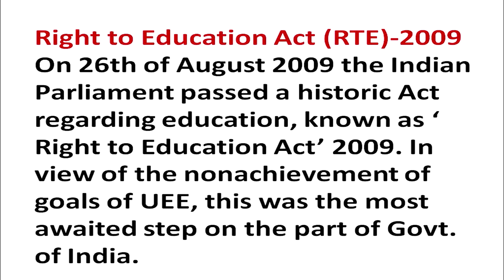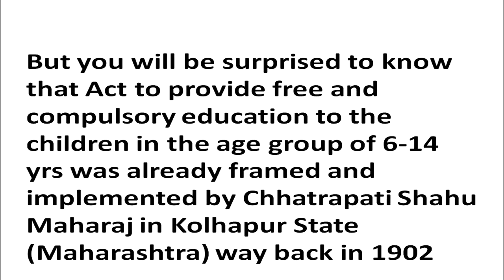In view of the non-achievement of goals of UEE, that is Universal Elementary Education, this was the most awaited step on the part of the Government of India. You will be surprised to know that an act to provide free and compulsory education to children in the age group of 6 to 14 years was already framed and implemented by Chhatrapati Sahur Maharaj in Kohlapur state, that is in Maharashtra, way back in 1902.